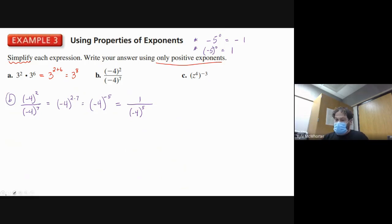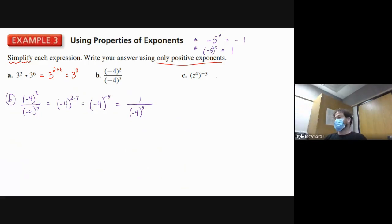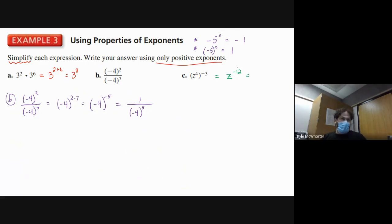Part C is a power to a power, so we multiply the exponents: z to the three times negative four, which is z to the negative twelve. But we can't have negative exponents in a simplified answer, so we move the base downstairs, giving one over z to the twelfth. That takes away the negative from the exponent.